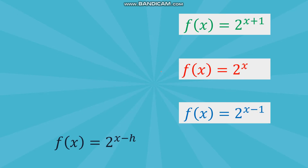Let's look at three sets of functions: f(x) = 2 raised to (x+1), f(x) = 2 raised to x, and f(x) = 2 raised to (x−1). All of them follow the form f(x) = 2 raised to (x minus h), and since there is no k, k equals zero. The values of h are: negative 1 for the first, 0 for the second, and positive 1 for the third.